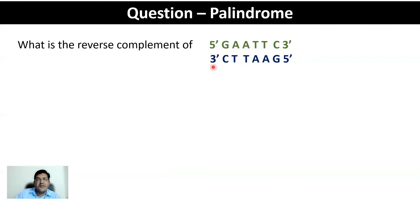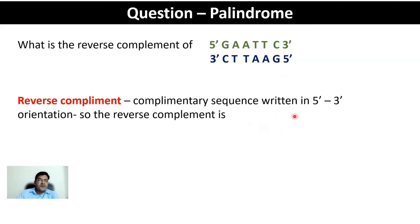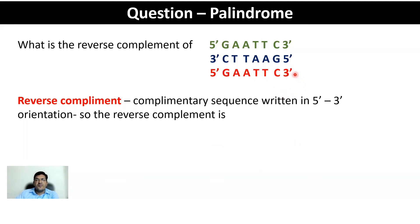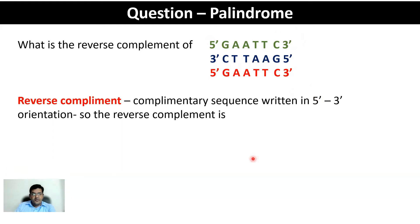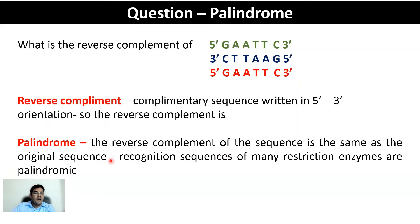The reverse complement is the complementary sequence written in five prime to three prime orientation. Taking that complementary sequence and writing it from five prime to three prime gives us GAATTC. You'll notice this is the same as the original sequence given — such a sequence where the reverse complement equals the original sequence is known as a palindrome. Palindromes are a common feature of many restriction enzyme recognition sequences.